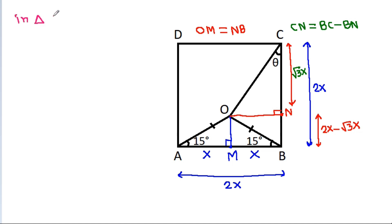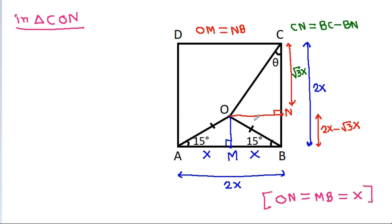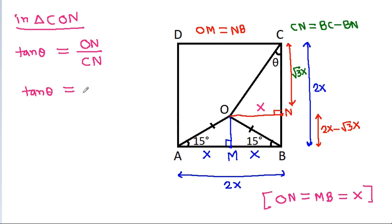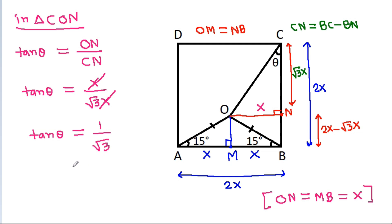In triangle CON, ON will be equal to MB, that is x. So tan θ is equal to ON divided by CN, and tan θ equals x divided by √3·x. This gives 1/√3, which means theta is equal to 30 degrees.